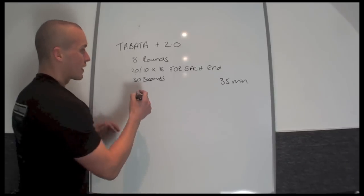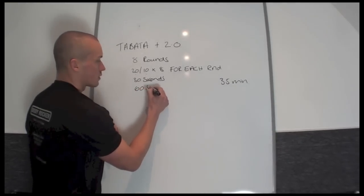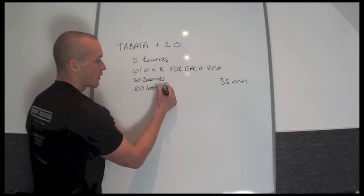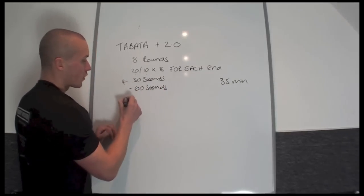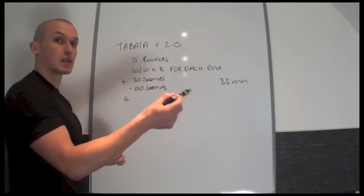Following the 4th round, you're going to get 60 seconds rest. So when you're technically halfway through the workout, you get 60 seconds rest after 4 rounds. And then the final 4 rounds, they'll have 30 seconds rest in between each one.